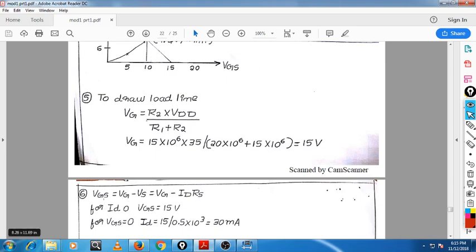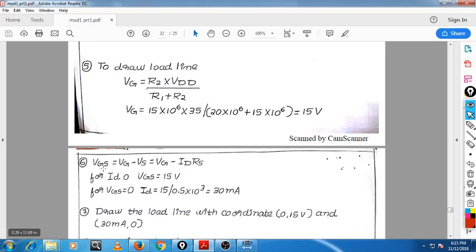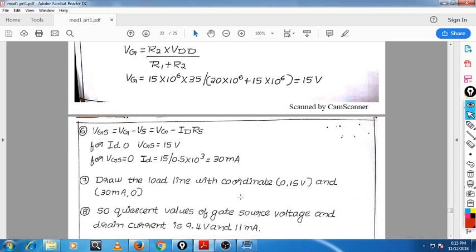When you make VGS equal to 0, what is the value of ID you are getting? When you make VGS equal to 0, ID we got 30 milliamperes. When you make ID equal to 0, VGS you got 15V.